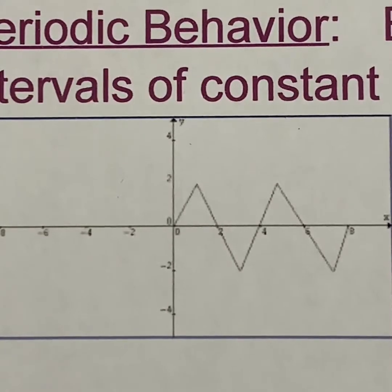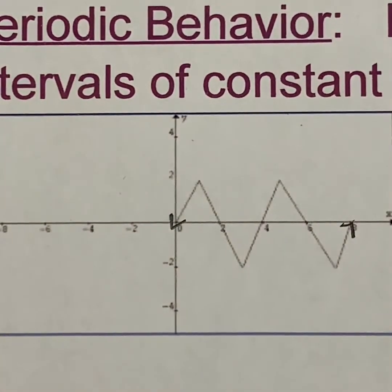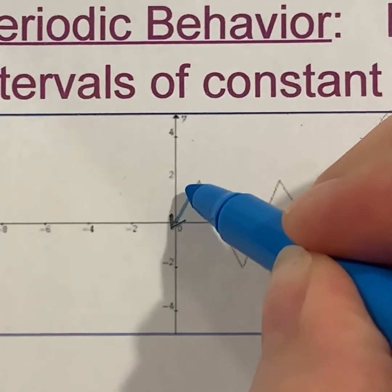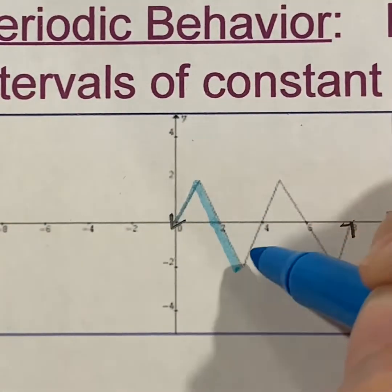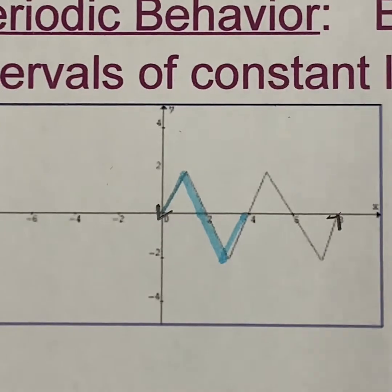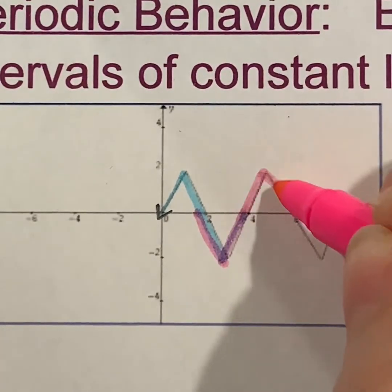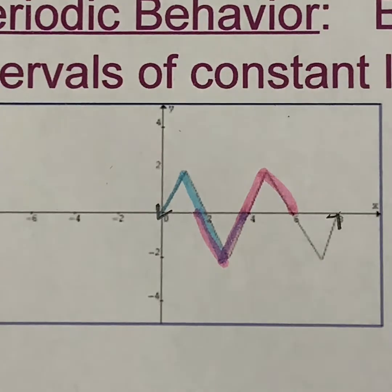I've zoomed in on this function so you can see. Pretend this function was continuing in both directions — that's what it needs to do to be considered a periodic function. I want to point out the pattern. If I start here, I go up, down, below the x-axis and back up — that would be considered one cycle. Maybe you visualized it differently: starting here, going down, touching the x-axis, coming up and going down again. That's another cycle — it's still going through the same amount of numbers horizontally.